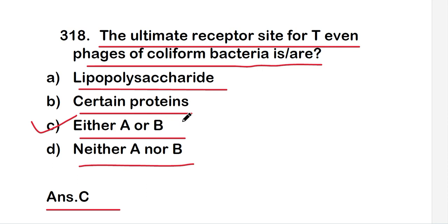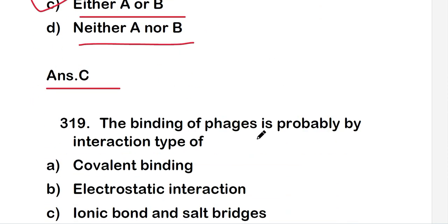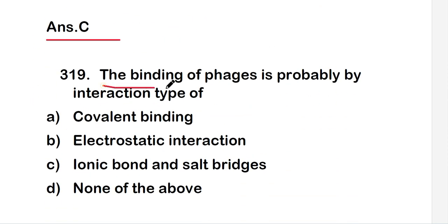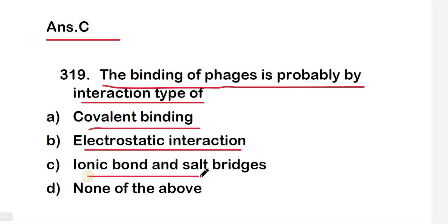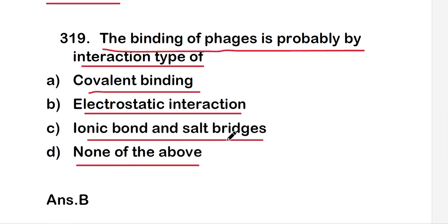The next question is: the binding of phages is probably by interaction type of — covalent binding, electrostatic interaction, ionic bond and salt bridge, or none of the above? The right answer is option B, that is electrostatic interaction. So the binding of phages is probably by electrostatic interaction.